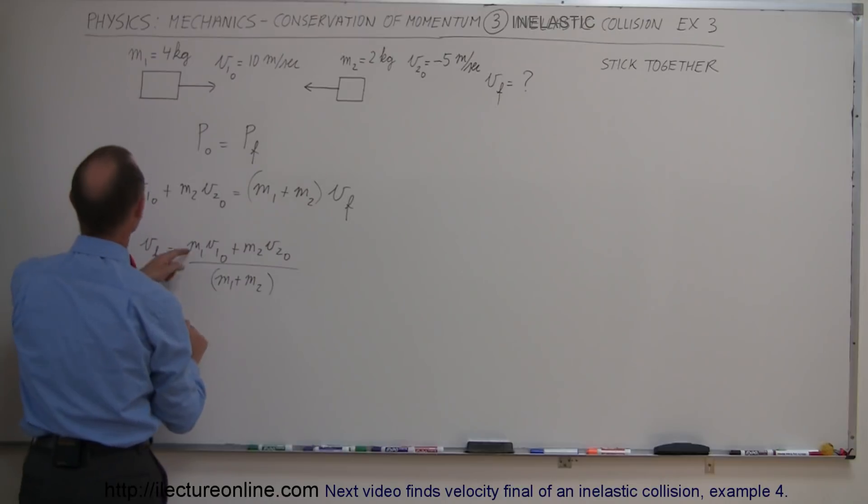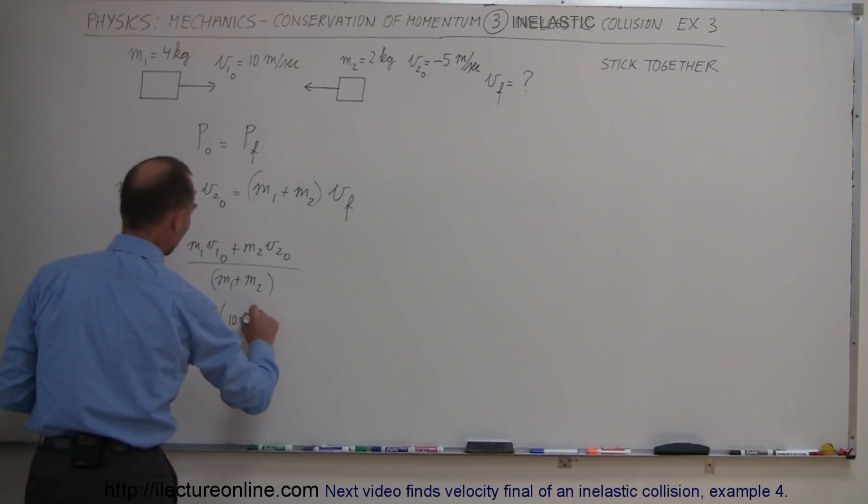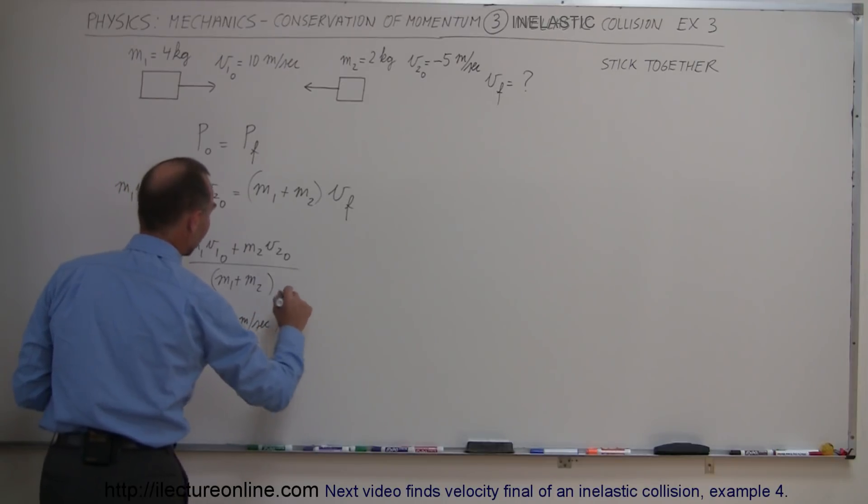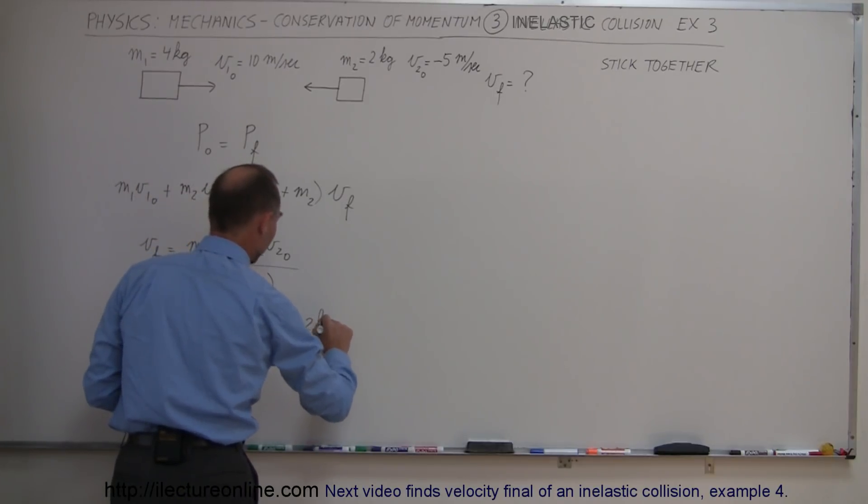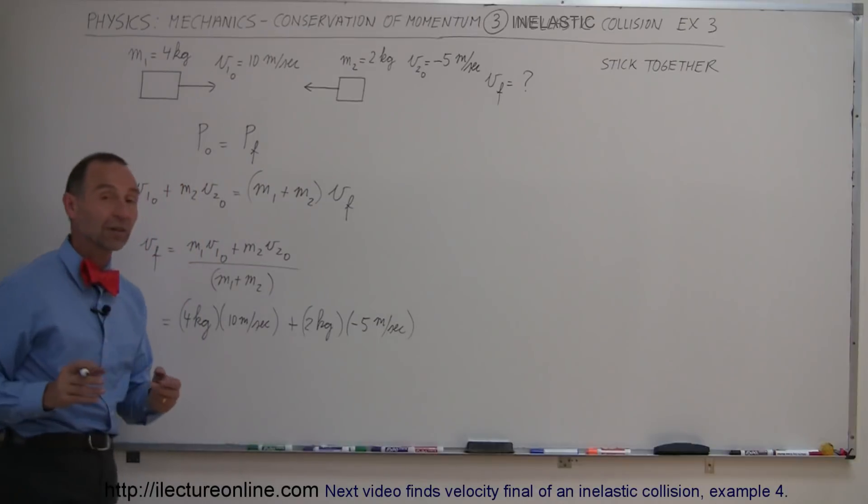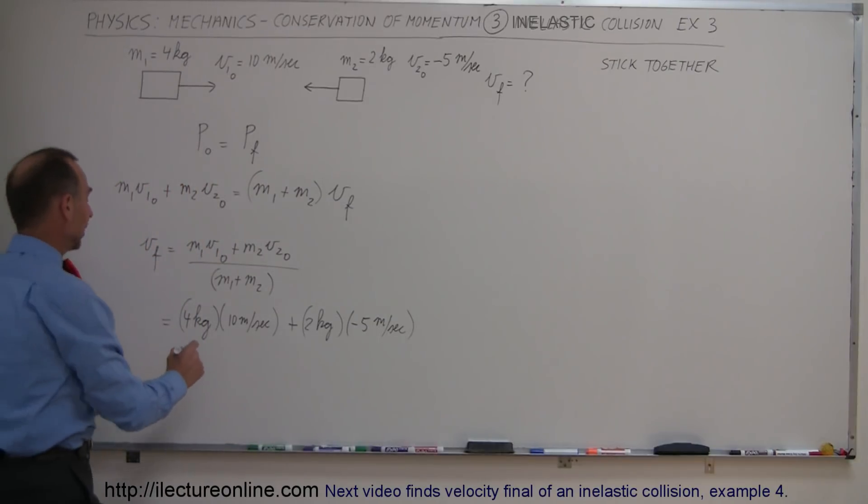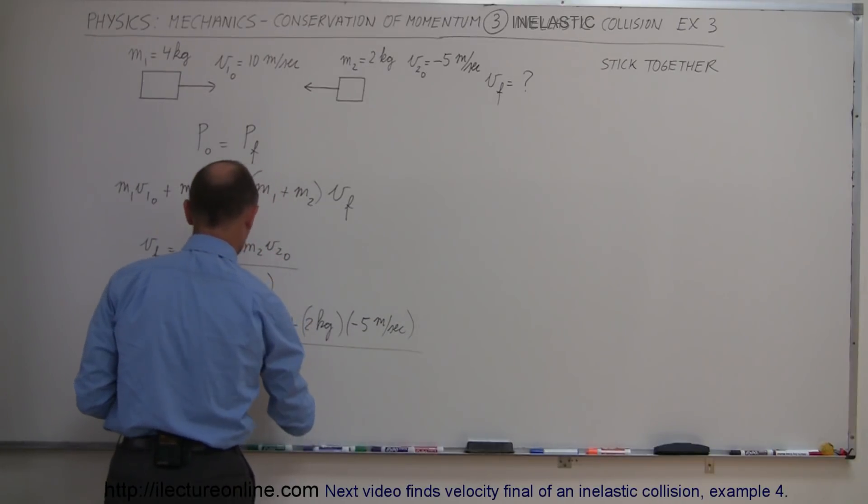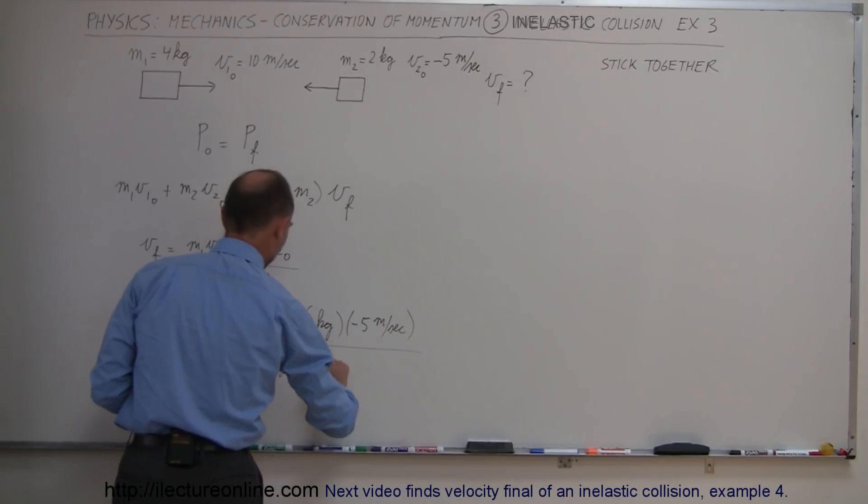So this is equal to M1, which is 4 kilograms, times initial velocity of 10 meters per second, plus M2, which is 2 kilograms, times negative 5 meters per second, because the original velocity, the initial velocity is in the negative direction, and the whole thing divided by the sum of the two masses, which is 4 kilograms plus 2 kilograms.